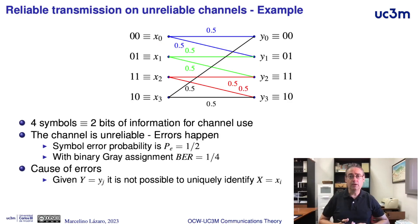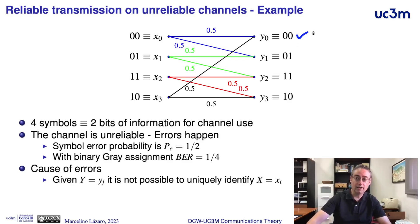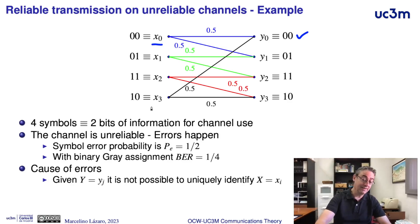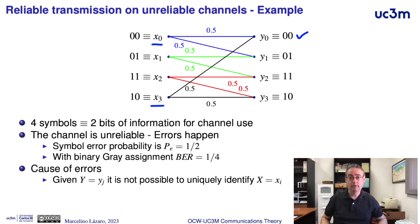Errors happen because when we receive an observation — for instance if we see Y0 — it is not possible to identify, without uncertainty, uniquely the symbol that was transmitted. For instance, in this case, the transmitted symbol can be X0, but the transmitted symbol can also be X3. It is not possible to identify uniquely the transmitted symbol.